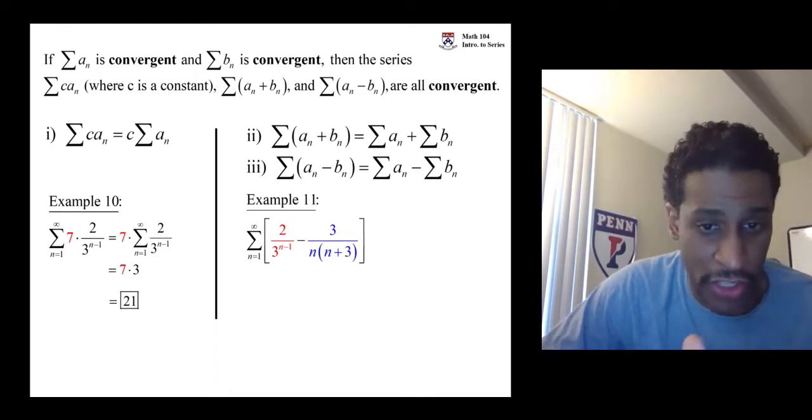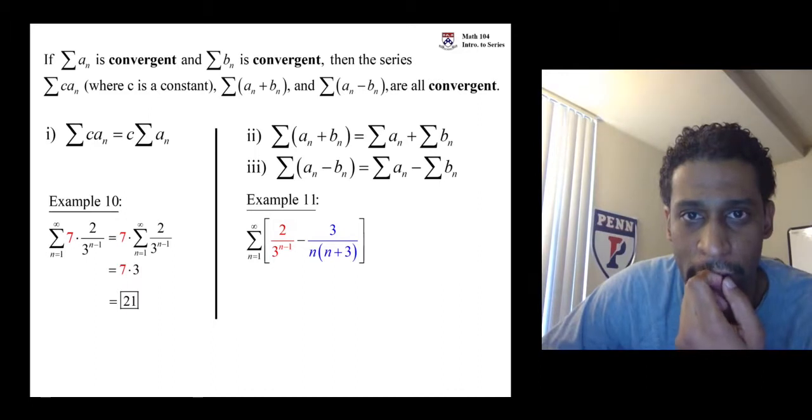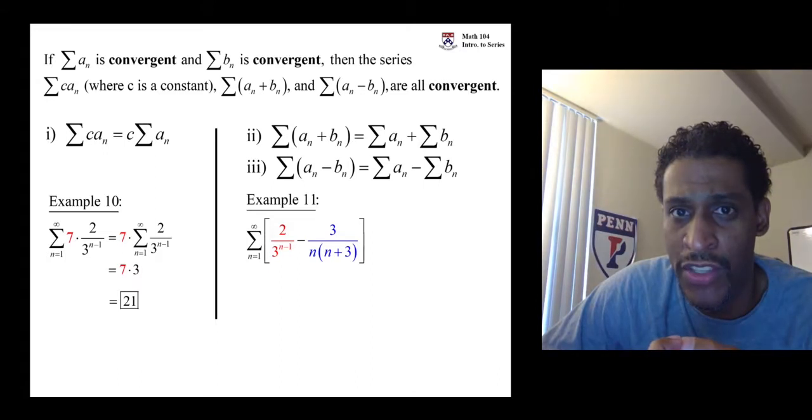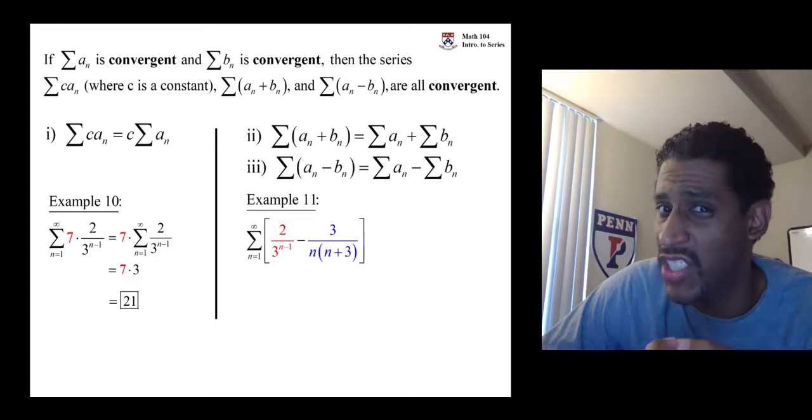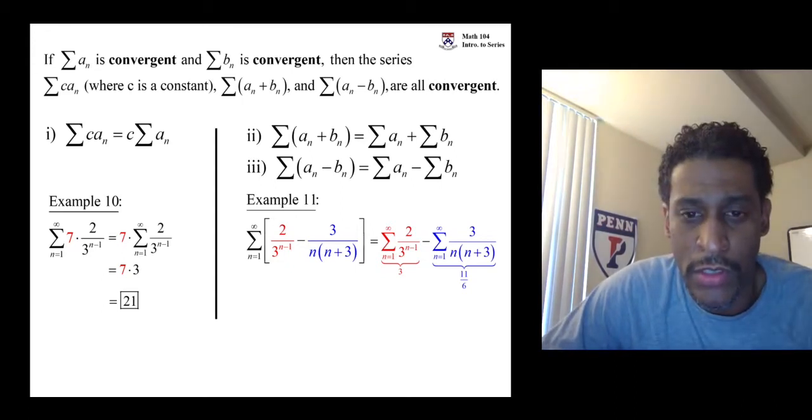They both converged. The geometric converged to three, a sum of three, and the telescoping that was partial fraction decomposition converged to a sum of 11 over six.